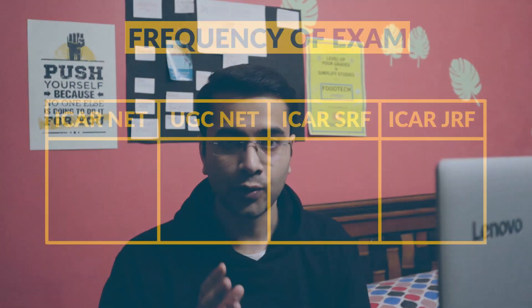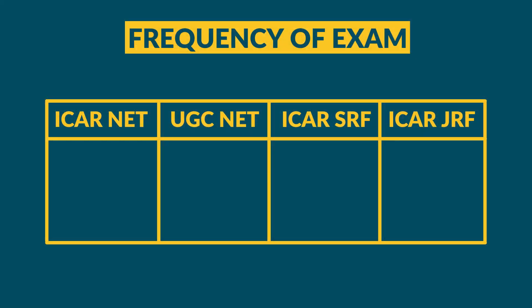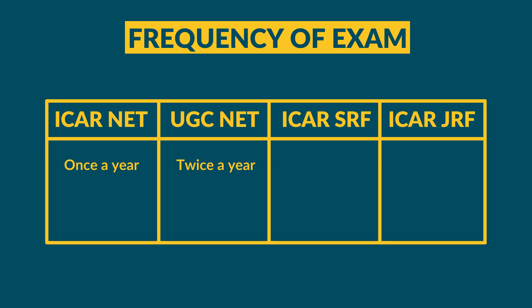Regarding frequency of examination: ICER-NET is held once a year. UGC-NET is held twice a year — in May and November. ICER-SRF is held once a year, and the same goes for JRF.